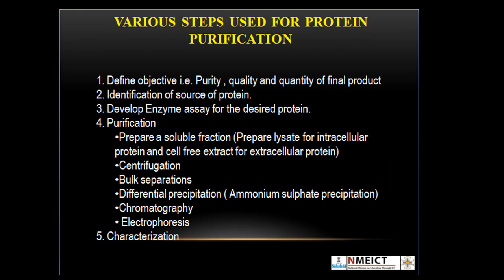There are various steps used for protein purification. We need to define an objective, identify the source of protein, develop an enzyme assay, and then proceed with purification. The purification involves the preparation of soluble fractions, followed by centrifugation. Then bulk separation is generally achieved by ammonium sulfate precipitation. After that, one may proceed with chromatographic techniques, since protein purification generally involves a multi-step process.